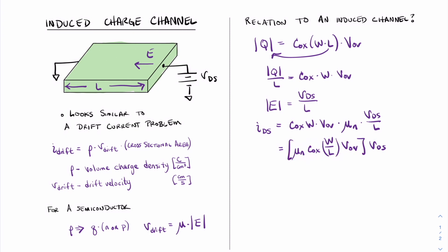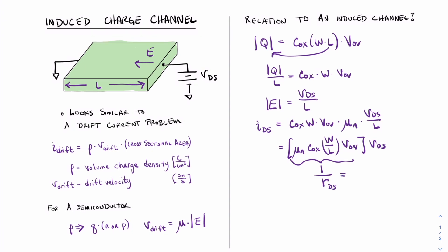If V equals IR, then this must be a value that is one over a resistance. In fact, we'll call this resistance RDS. And if you recall our terms from circuit theory, this is a conductance value that we'll call GDS.